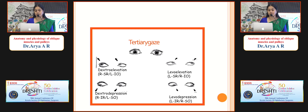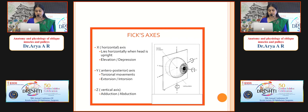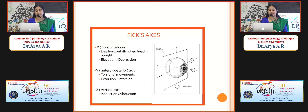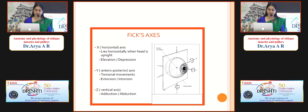Regarding the cardinal actions: in dextrodepression, the right inferior rectus and left superior oblique act; in levodepression, the left inferior rectus and right superior oblique. In dextroelevation, the right superior rectus and left inferior oblique; in levoelevation, the left superior rectus and right inferior oblique. Along the x-axis, elevation and depression take place. Along the y-axis, torsional movements — extorsion or intorsion. Along the vertical axis, adduction and abduction occur.